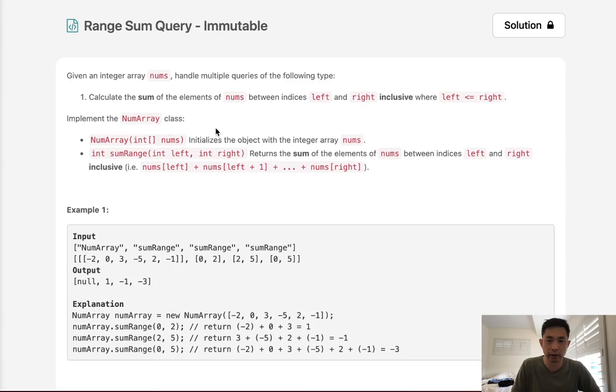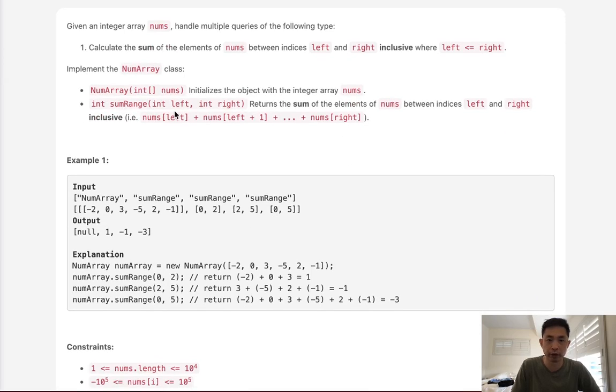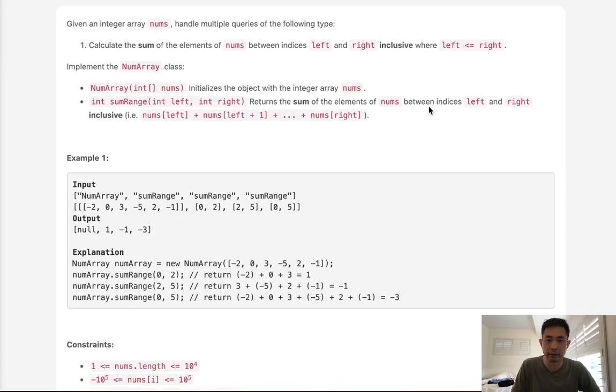Basically we want to create a num array class which initializes this object with the integer array nums and we have a function sum range that takes the left and right indices and is going to return the sum of all of those elements.